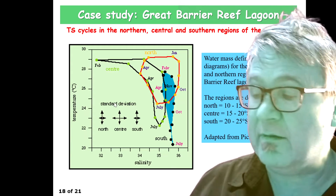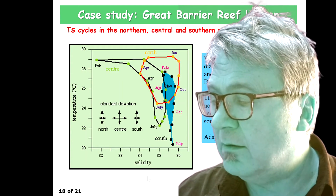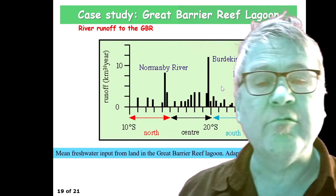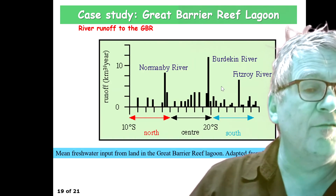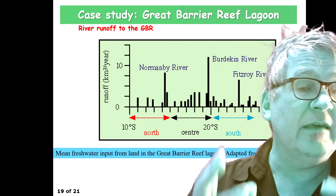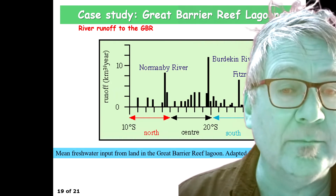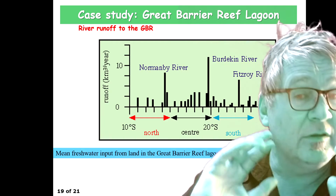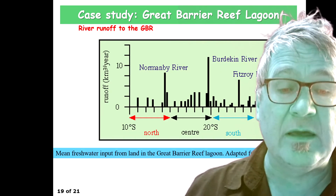Just indicating where you get the river flows — river runoff to the Great Barrier Reef. You have the Burdekin River in the central parts, and its outflow peaks during February time. That creates the big peak in low salinity.